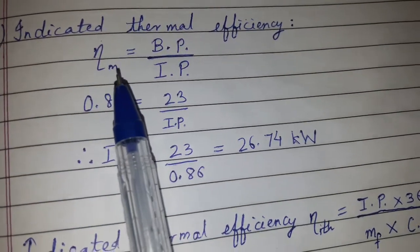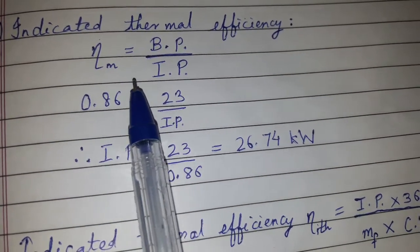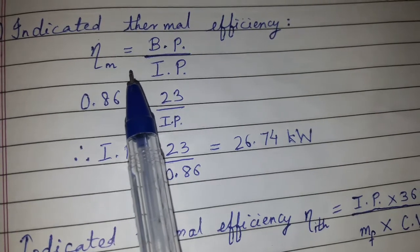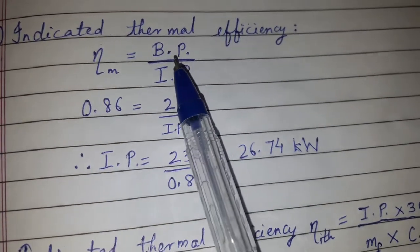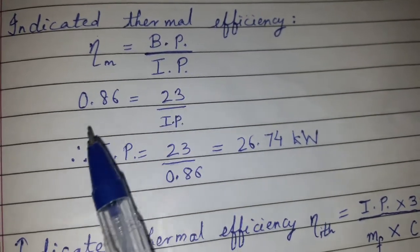We have mechanical efficiency = 0.86, and the formula for mechanical efficiency is η_mech = BP / IP.